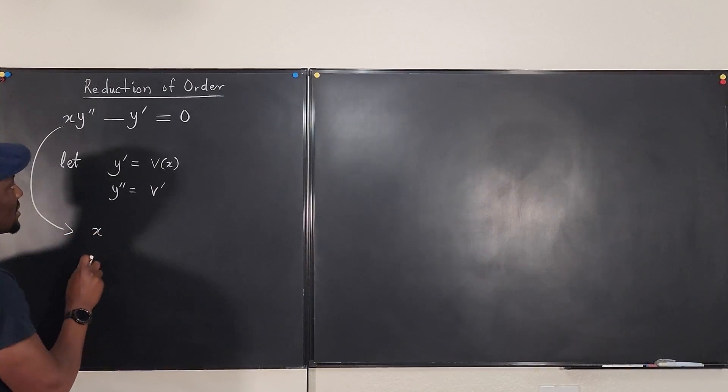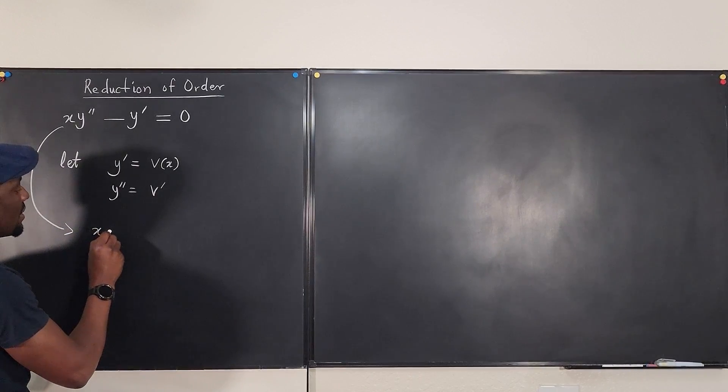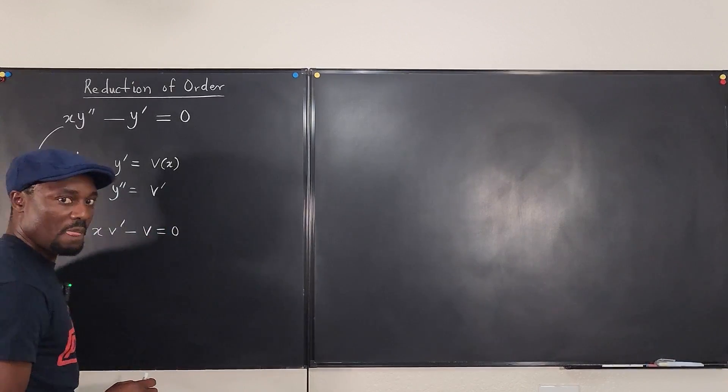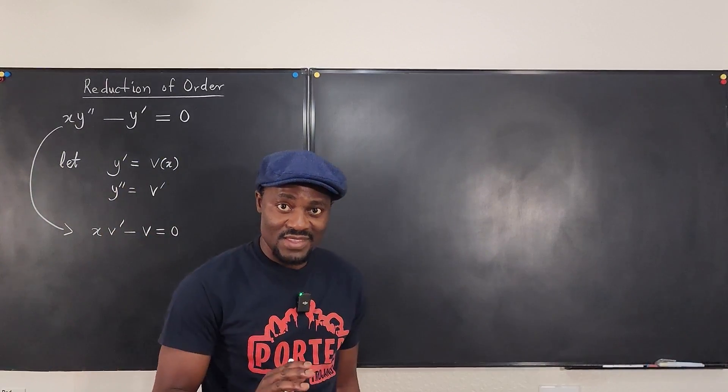So I can say at this moment that I can rewrite this expression we have here to look like this. I can say this is x multiplied by v prime minus v is equal to zero. That's it.